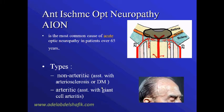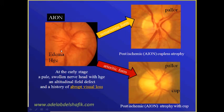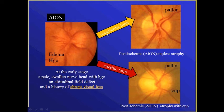There is acute affection of the optic nerve over the age of 45. We know that it can be non-arteritic, associated with arteriosclerosis or diabetes, or it can be arteritic, associated with giant cell arteritis. In the acute stage we get hemorrhage and edema with abrupt visual loss.